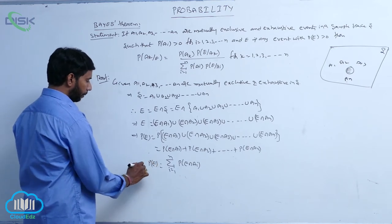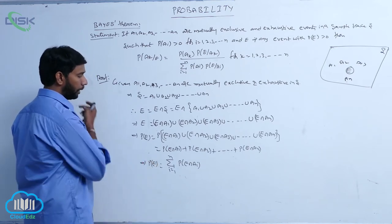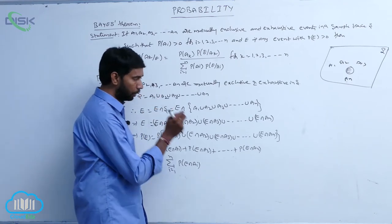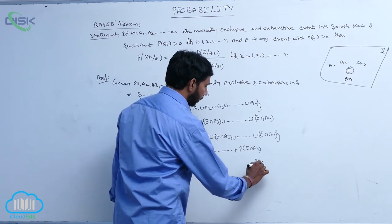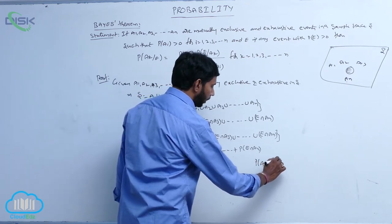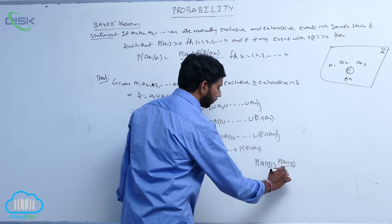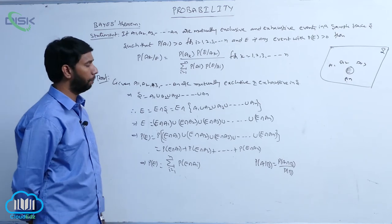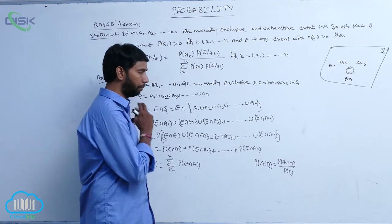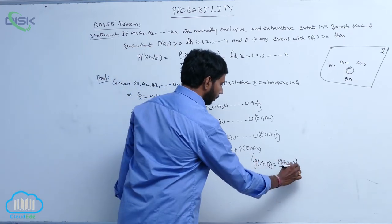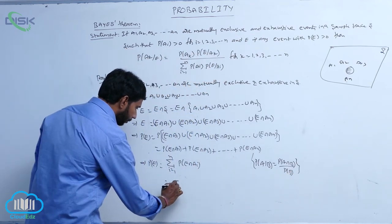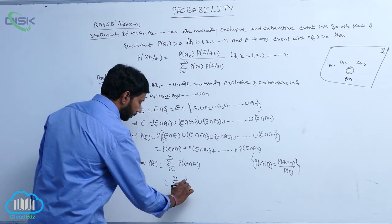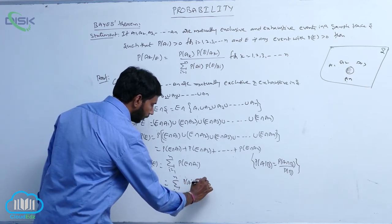So P(E) equals sigma over i equal to 1 to n of P(E intersection Ai). We know from the multiplication theorem that P(A given B) is equal to P(A intersection B) divided by P(B). From this condition, P(E intersection Ai) can be written as P(Ai) times P(E given Ai).